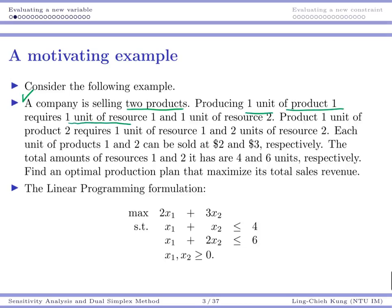Making one unit of product one takes one unit of resource one and one unit of resource two. Producing one unit of product two requires one unit of resource one and two units of resource two. There are some resources, some products, and some resource allocation problems. We are going to make products one and two because they can be sold at $2 and $3 each, respectively.